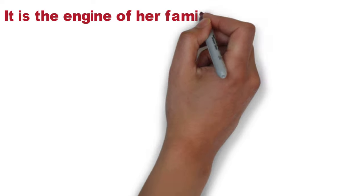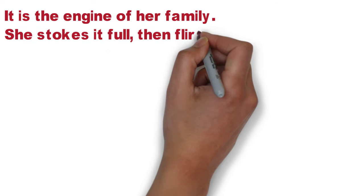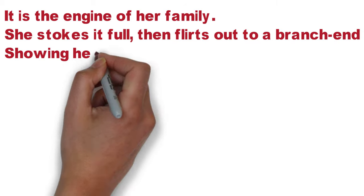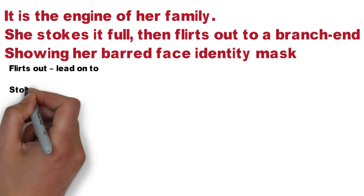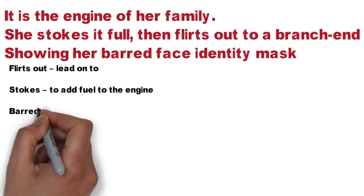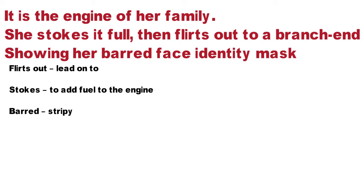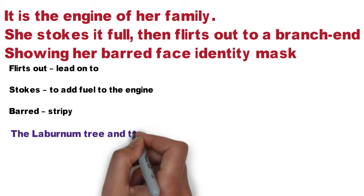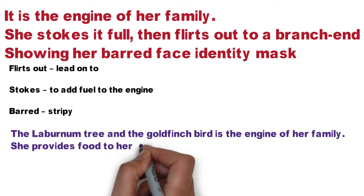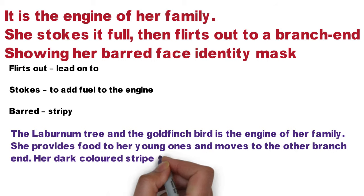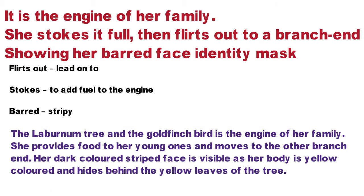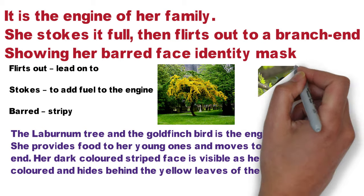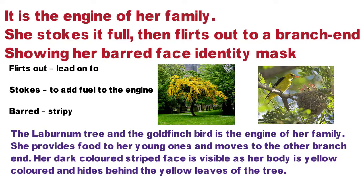Next stanza: 'It is the engine of her family. She stokes it full. Then floats out to a branch end, showing her bad face identity mask.' Stokes — to add fuel to the engine. Bird stripe is also the code. The laburnum tree is the goldfinch bird's family engine. If the laburnum tree is fed the young ones, it will go away. The laburnum tree leaves are yellow color, and the goldfinch bird has a stripe mark.